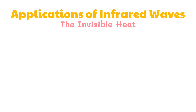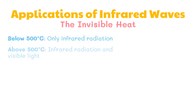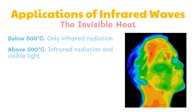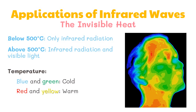The amount and wavelength of radiation depend on temperature. Below 500 degrees Celsius, an object emits only infrared radiation. Above 500 degrees Celsius, an object glows and emits both infrared and visible light. The difference in color determines the differences in temperature — for example, shades of blue and green indicate regions of colder temperature, while red and yellow indicate warmer temperature.